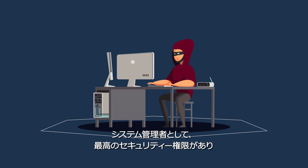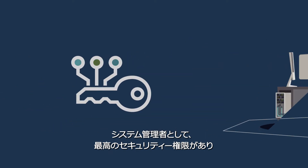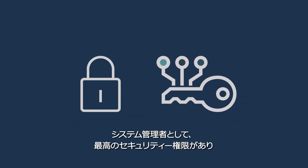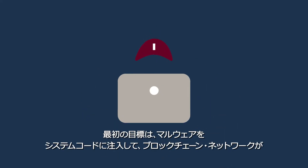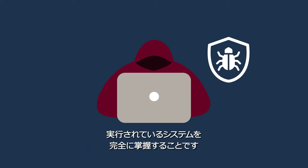As a systems admin, he has the highest security clearance and thinks it should be no problem to use the network to steal some money. His first goal is to take full control of the system on which the blockchain network is running by injecting malware into the system code.